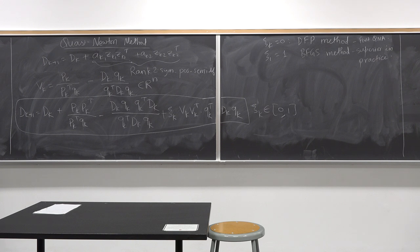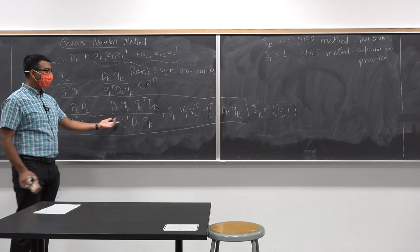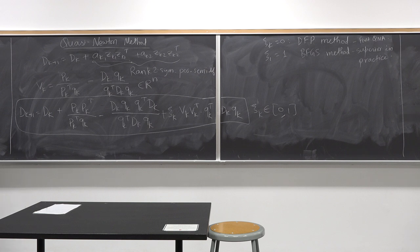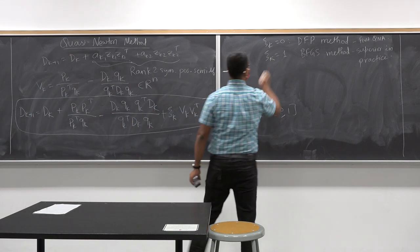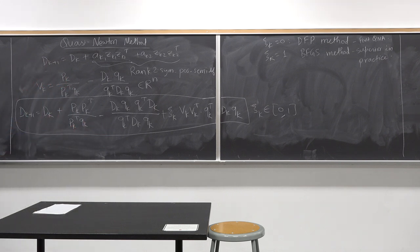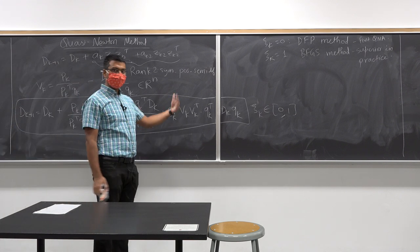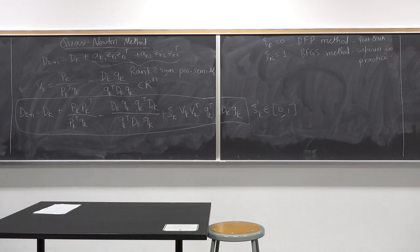When ξ_k = 0, this is known as the DFP method. When ξ_k = 1, this is the BFGS method, which is superior in practice. Later, people generalized by allowing ξ_k ∈ [0,1], giving a rank-3 update in between, but the two extreme endpoints are rank-2 updates. BFGS is one of the methods built into SciPy and other optimization packages.